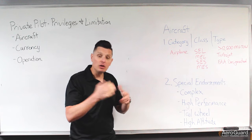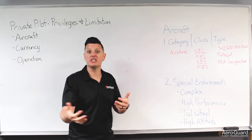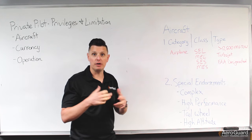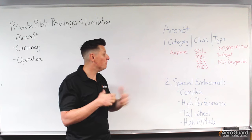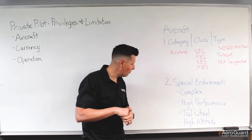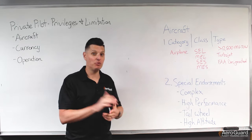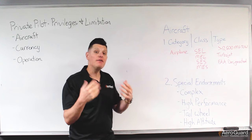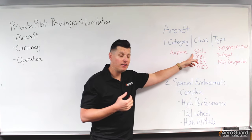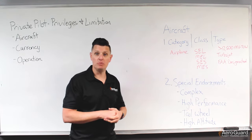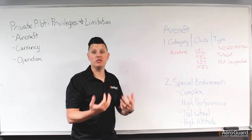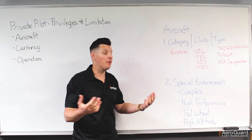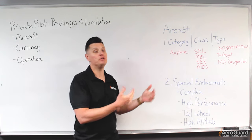As an example, the Piper M600 is a turboprop airplane with retractable landing gear and a controllable pitch propeller. It meets a few of these requirements — it's a complex airplane, a high performance airplane, and its service ceiling is above 25,000 feet, making it a high altitude airplane as well. So even though the Piper M600 is airplane single engine land, I would have to have these special endorsements to fly it. Whereas a Cessna 172, being plain airplane single engine land, doesn't require any of these endorsements.